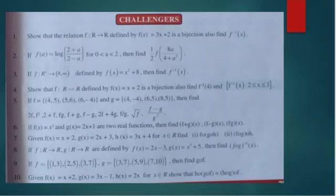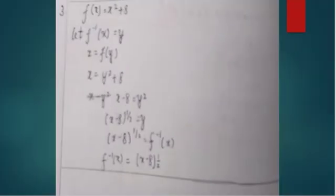The third question is straightforward. f(x) = x² + 8. Let f inverse(x) = y, so x = y² + 8. Transposing 8 to the other side: y² = x - 8. Therefore f inverse(x) = √(x - 8).